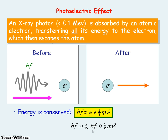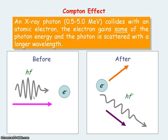In the Compton effect, an X-ray photon collides with an atomic electron, where this electron gains some energy from the X-ray photon and is ejected from the atom. The photon, because it has lost some energy, scatters and changes direction, but it has a longer wavelength or a lower frequency than the original X-ray photon.